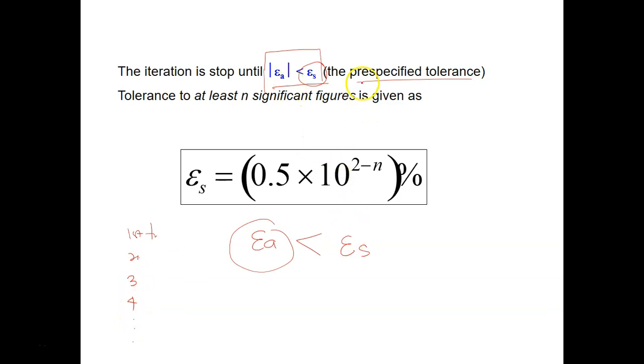So this ES, what we call as the pre-specified tolerance, can be represented by this formula here. So ES equals to 0.5 times 10 to the power of 2 minus N times 100%. So what is N here? N is just significant figures. So let's say in the problem you are asked to calculate a value and use how many significant figures, 2 or 3 or 4, that is the value of N, and just insert that here to calculate what is your pre-specified tolerance.